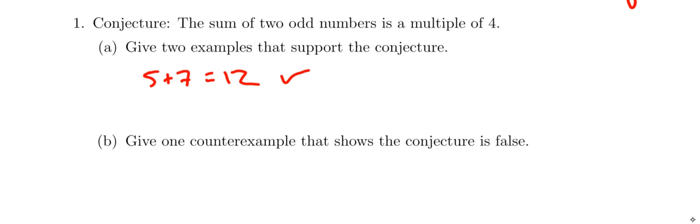Okay, another example we might give would be, let's say, three and nine, which also gives you twelve. And we've already established that is in fact a multiple of four. So those two pairs support the conjecture.